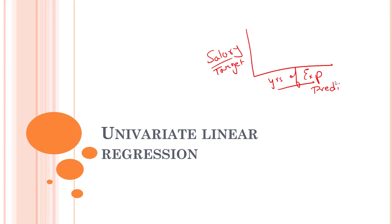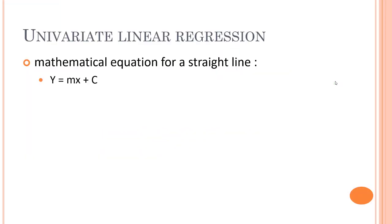Before jumping into the equation of univariate linear regression, let us recall something from our high school math - the equation for a straight line. Y equals mx plus c is the equation for the slope of a straight line. This can be positive or negative depending on the sign.